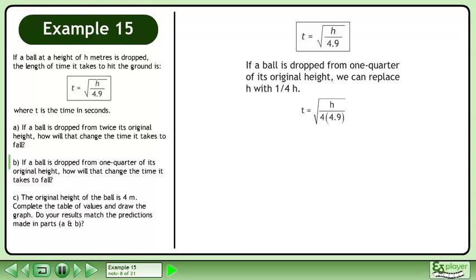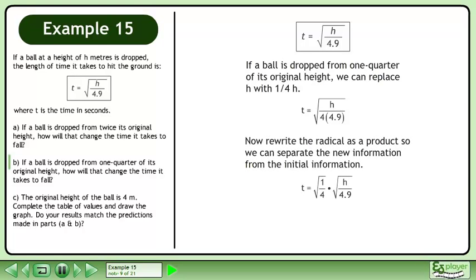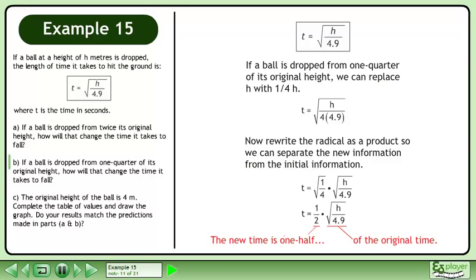If a ball is dropped from 1 quarter of its original height, we can replace h with 1 over 4 times h. This gives us t equals the square root of h over 4 times 4.9. Now rewrite the radical as a product so we can separate the new information from the initial information. This gives us t equals the square root of 1 over 4 times the square root of h over 4.9. The square root of 1 over 4 is 1 over 2. The new time is one half of the original time.